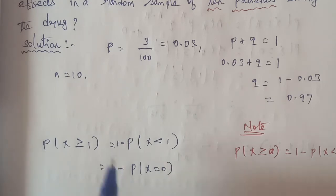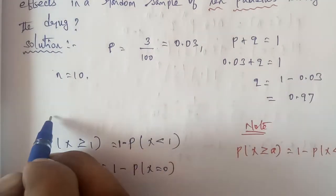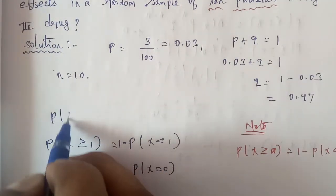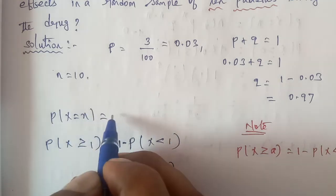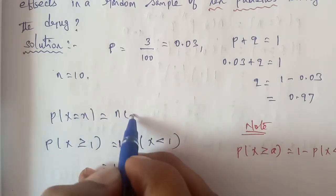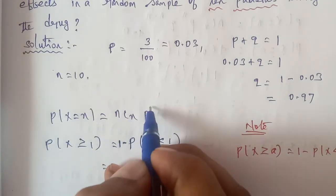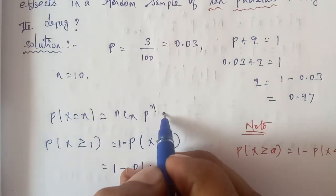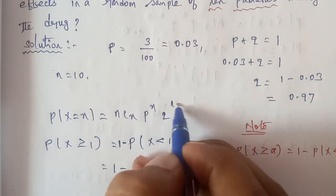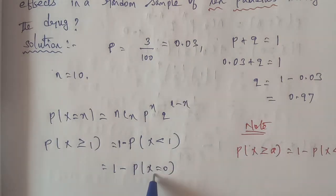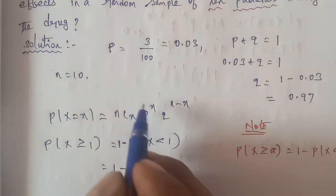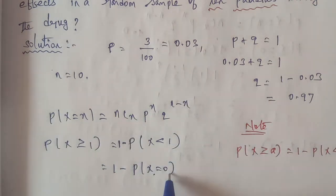Now we apply the binomial distribution formula. P of X equals x is given by nCx times P power x times Q power n minus x. We will substitute the value where X equals 0 to find P of X equals 0.